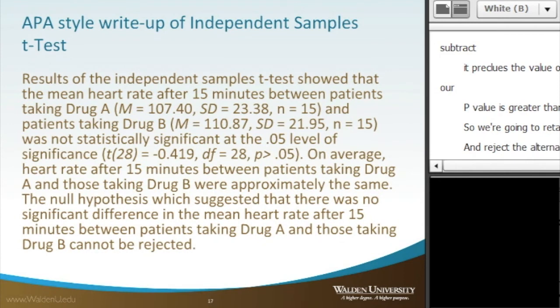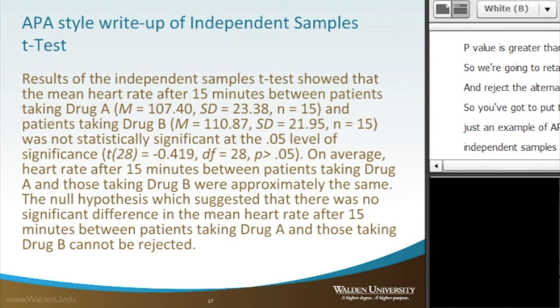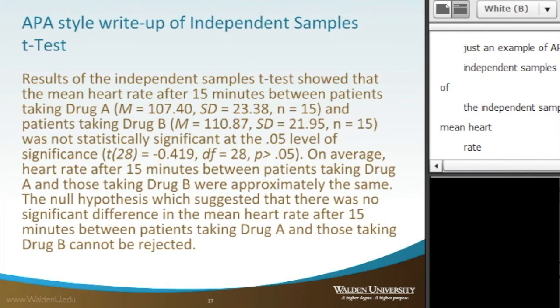So you've got to put this in your paper. So here's just an example of an APA-style write-up for the independent samples t-test. And it reads: the results of the independent samples t-test show that the mean heart rate after 15 minutes between patients taking drug A, where we have our mean equals 107.40, with a standard deviation of 23.38, with a sample size of n equals 15,